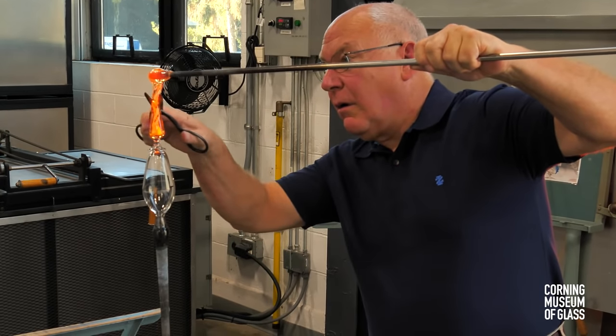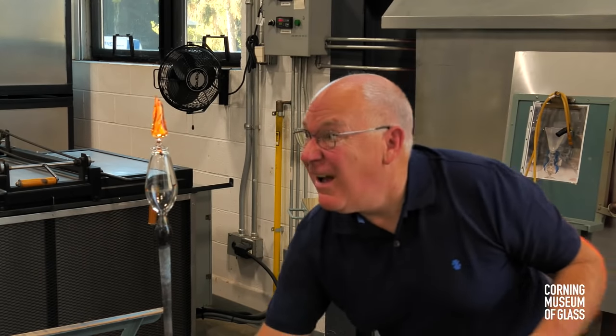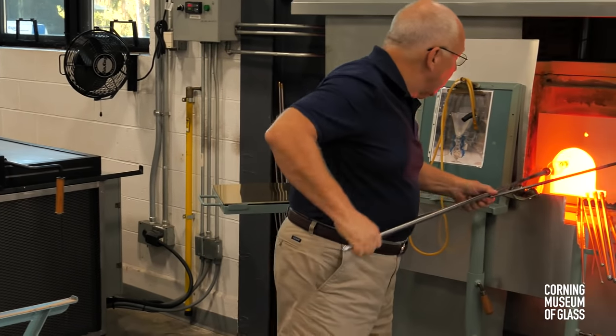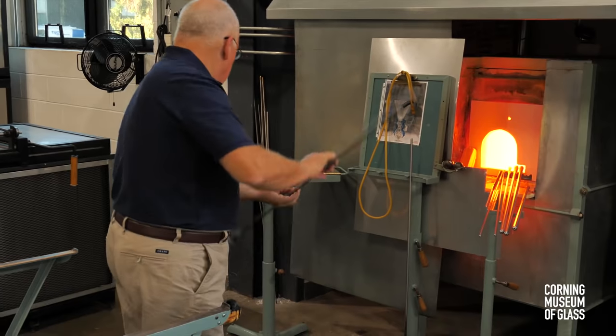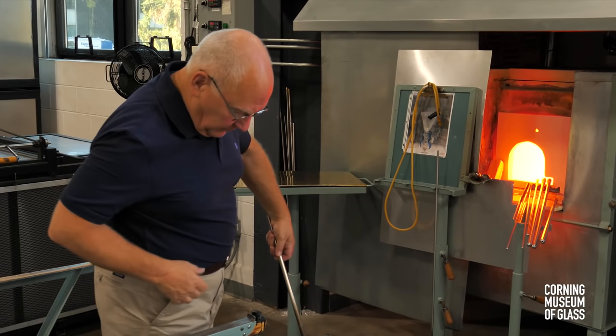The glass is cut free of the gathering iron, reheated. Centripetal force elongates the mass.